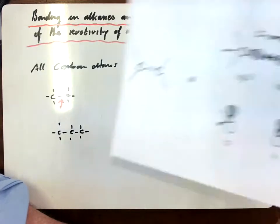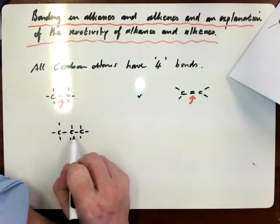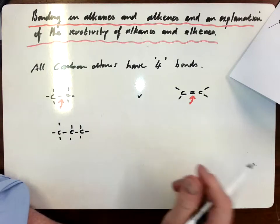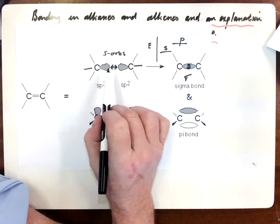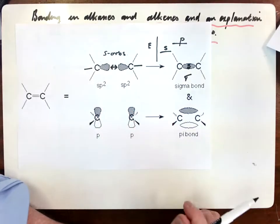Now, that is the bond, therefore, that holds carbons to each other in alkanes. So that's a very strong sigma bond caused by, and note the terms I'm using, head-on overlap of our S orbitals.